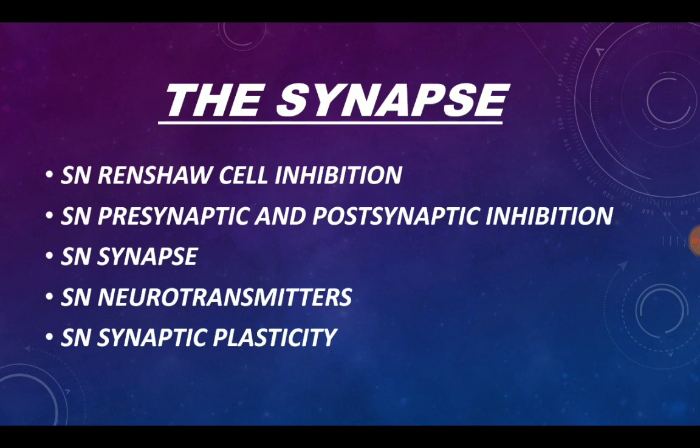The important questions framed from this chapter are: short note on Renshaw cell inhibition, short note on presynaptic and postsynaptic inhibition, synapse, neurotransmitters, and synaptic plasticity. Out of these, the first three questions are very important and the last two are not generally asked.